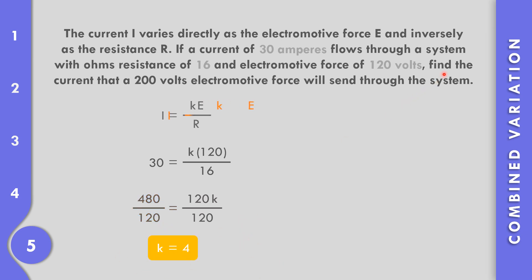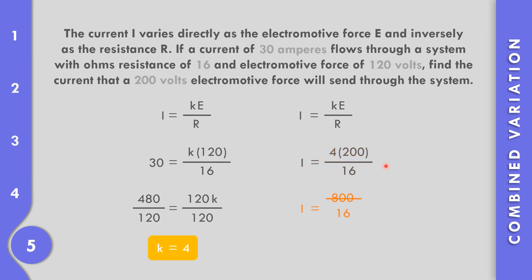Find the current when an electromotive force of 200 volts is applied through the same system. With k equals 4, i equals 4 times 200 over 16, which gives 800 over 16. Dividing 800 by 16, the current equals 50 amperes.